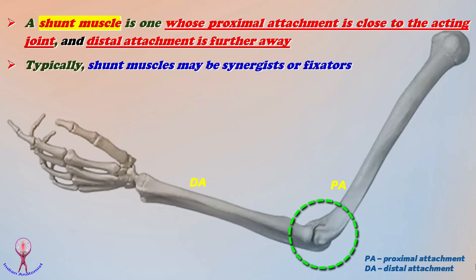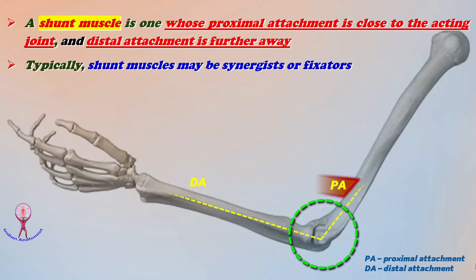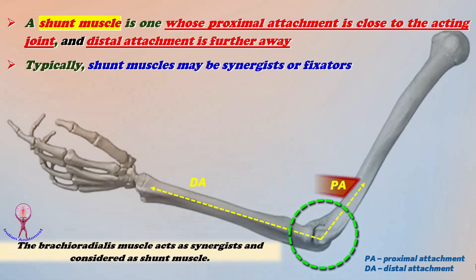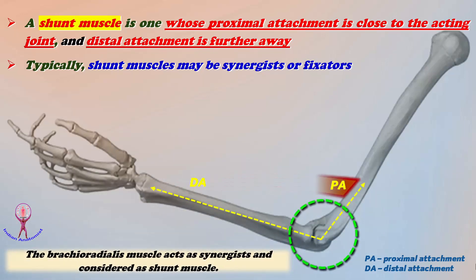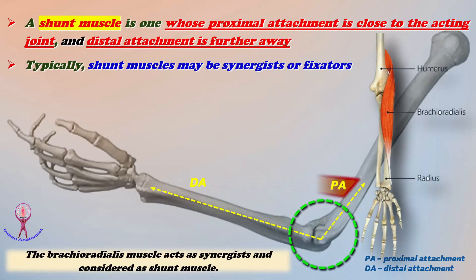The shunt muscles may be synergists or fixators. Taking the elbow joint again as an example — please remember the same elbow joint was discussed for the spurt muscle too — apart from the brachialis, the brachioradialis also brings about flexion. But the brachioradialis muscle is a synergist and fixator to the brachialis muscle, which is the prime mover.